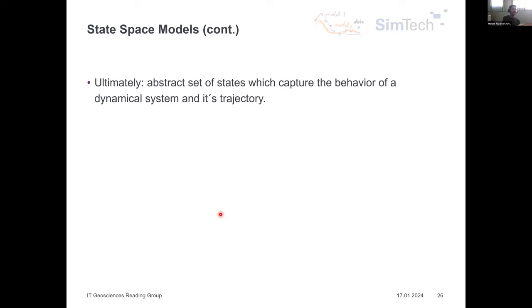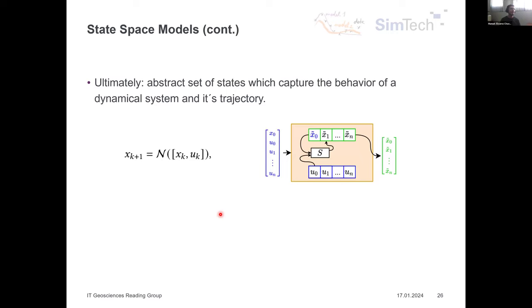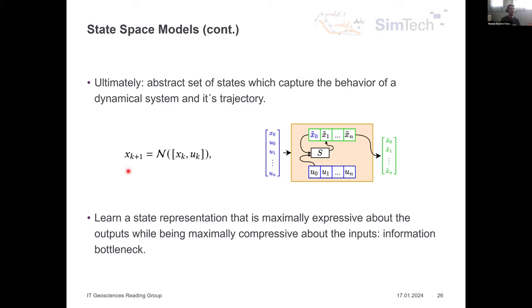The selective state-space model is used in Mamba as a block that also includes additional traditional neural network components — similar to how a transformer block is a component within a larger GPT architecture. Ultimately, using machine learning, you could get an abstract set of states capturing the behavior of the dynamical system and its trajectory, where a state X is updated by the previous state and inputs at each time step. It is this abstract state representation where the information bottleneck principle could be applied.